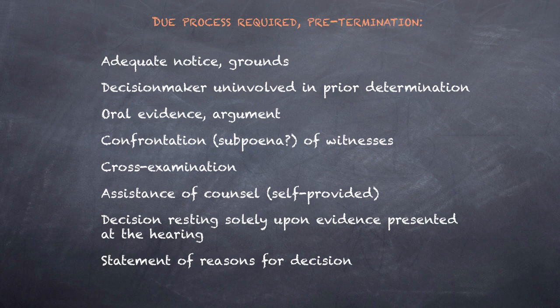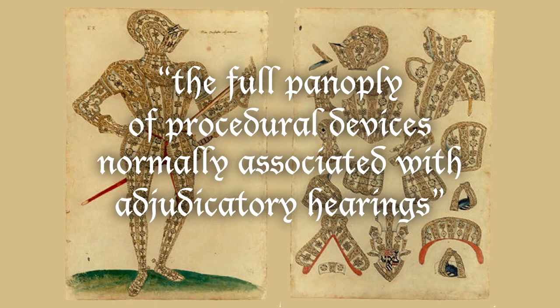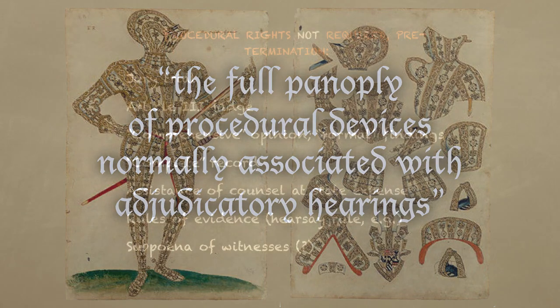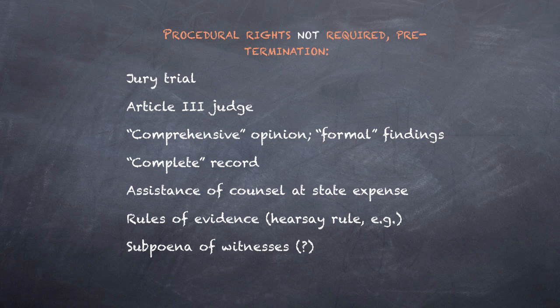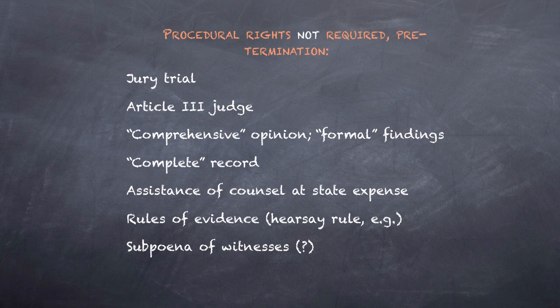We should note, however, that this list does not include everything making up what the court elsewhere terms the full panoply of procedural devices normally associated with adjudicatory hearings. Some of those devices are not required: jury trial, an Article III judge, a comprehensive opinion or formal findings, a complete record, assistance of counsel at state expense, and the rules of evidence — the hearsay rule, for example. There is also a question mark next to subpoena of witnesses because the court did not address that. To the extent that the burden is on the agency to disprove eligibility and hearsay evidence is excluded, subpoenas would add little to the recipient's armory.